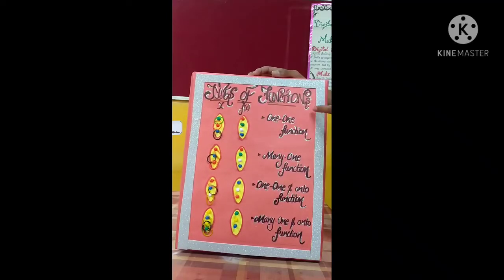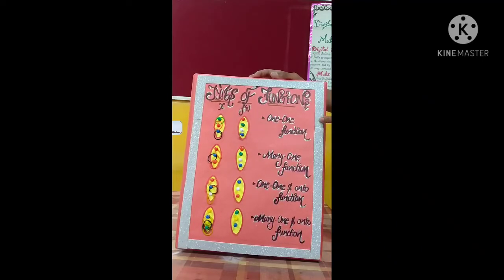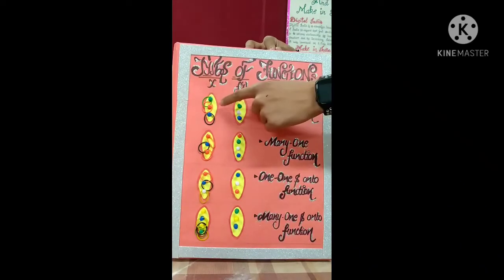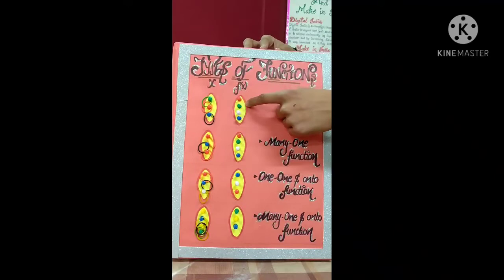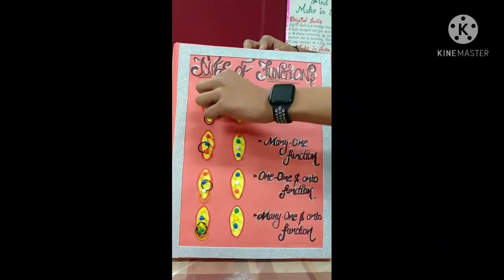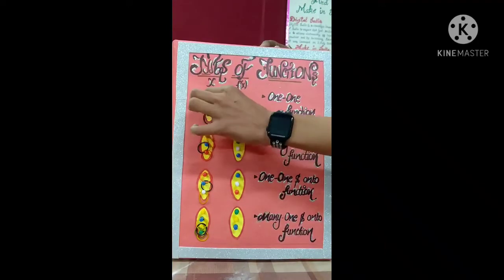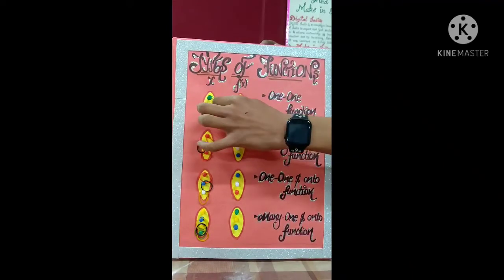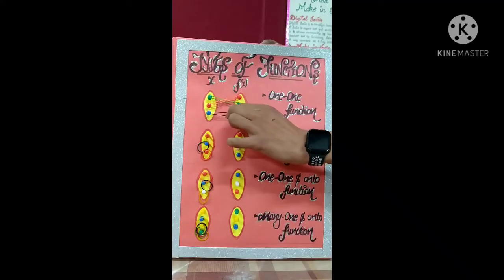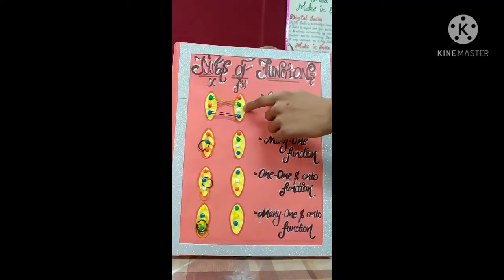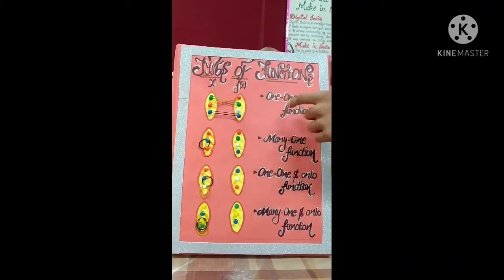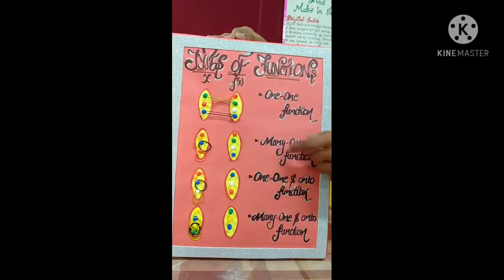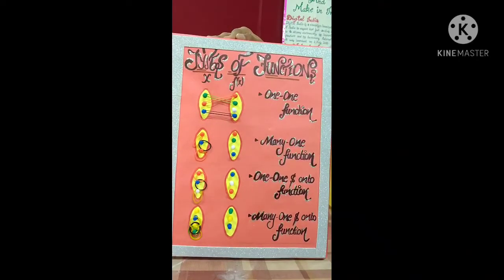This project can be used for teaching and learning methods for explaining the concepts of types of functions to the students. In the first row we can see that the elements correspond — for the value of x, a unique value of f(x) is required. Here you can see that only one element in f(x) is left. This type of function is known as a one-one function. We can see that for more than one value of x, there exists a corresponding unique value in f(x).